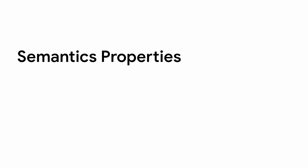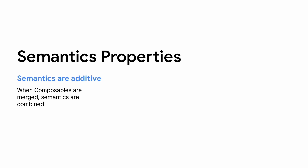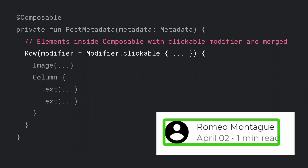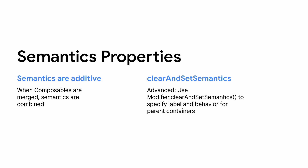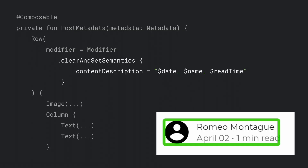Something else to consider when specifying merging behavior is semantics properties. The first is that semantics are additive — when you group together composables, all their semantics are combined. Going back to the example where we grouped elements with a clickable modifier, if we then add a content description to the image, it will be combined with the labels of the text because it's all part of the row. If you can't achieve the desired behavior just by adding semantics properties, sometimes you might need to use the clearAndSetSemantics method instead — for example, to specify the order in which the content description is read aloud.